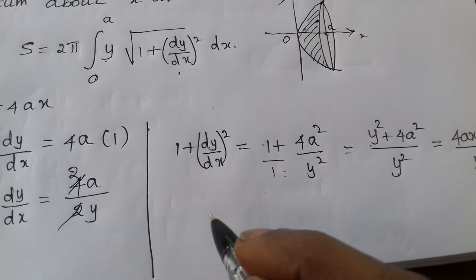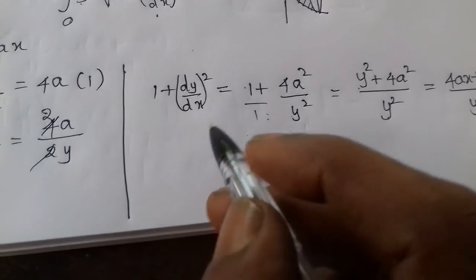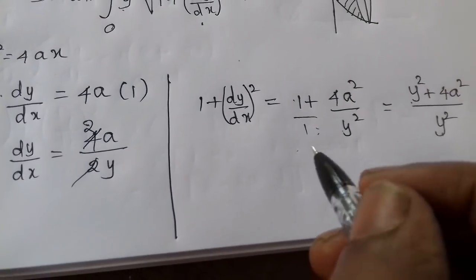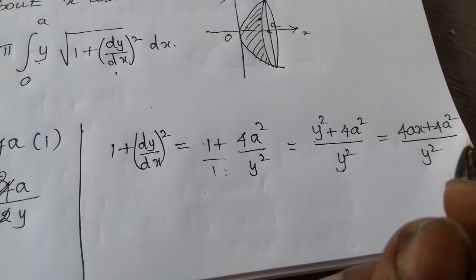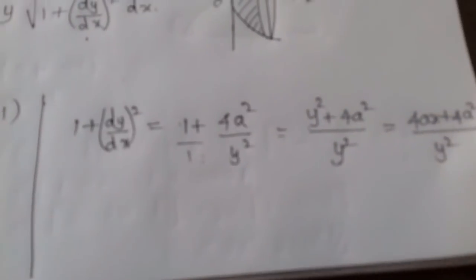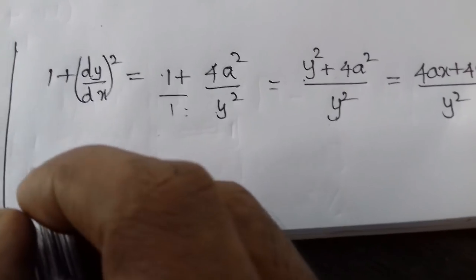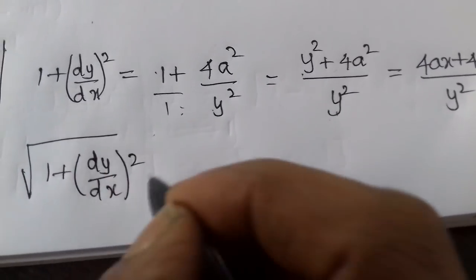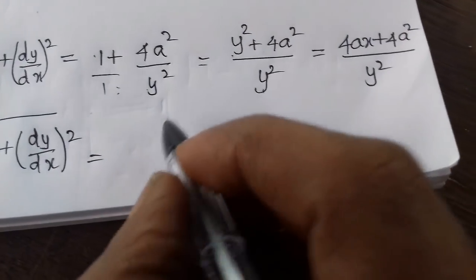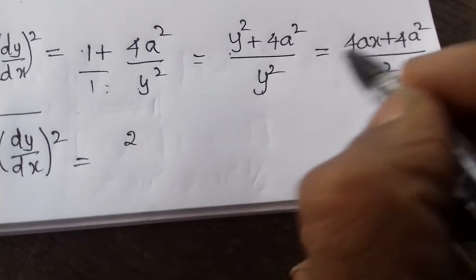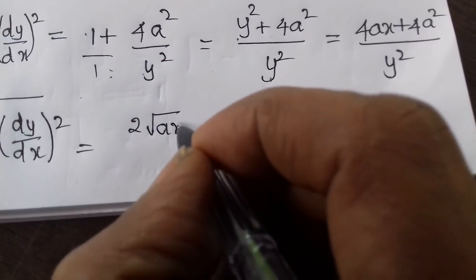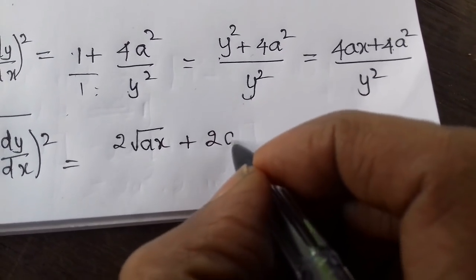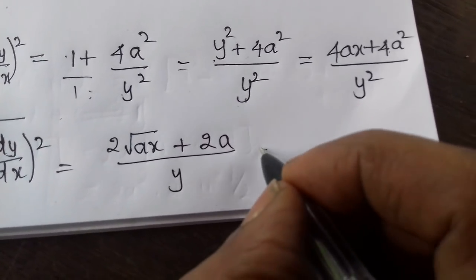Taking the square root: √[1 + (dy/dx)²] = √[4a(x+a)/y²] = (2√a · √(x+a)) / y. So the expression under the root simplifies to 2√a times √(x+a), divided by y.